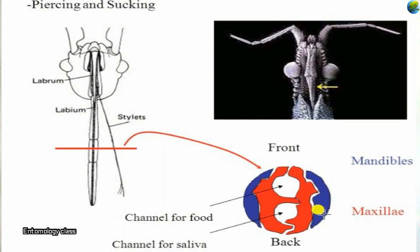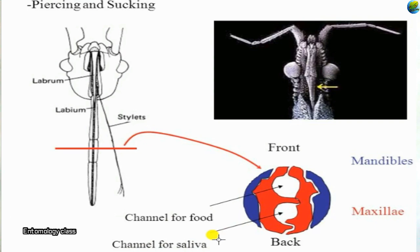After the stylets are inside the plant host, sap is sucked in through the food canal. Through the salivary canal below, the insect secretes toxic saliva containing enzymes to degrade the plant tissue. With that, the stylet can easily pierce inside and suck the food material needed.